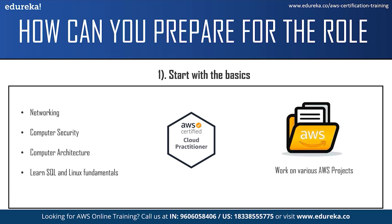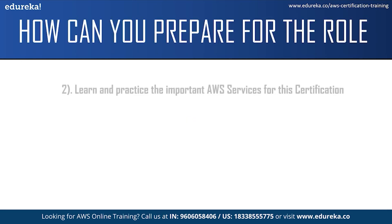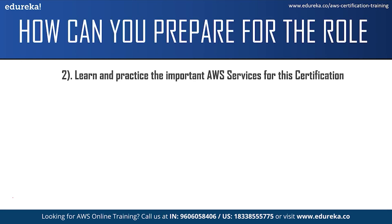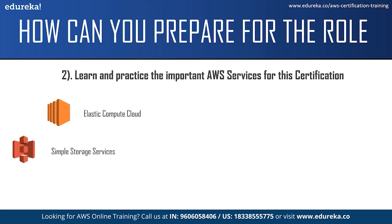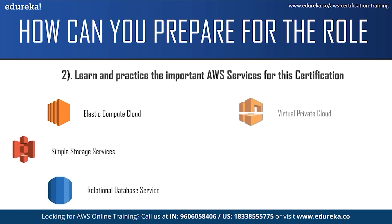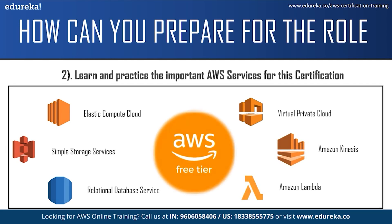The next step is working on AWS projects. You can work on projects across different services — start with easier projects initially and then move to more difficult ones. You can find good projects on the Amazon Web Services official website. After that, learn and practice the important AWS services for the certification: Elastic Compute Cloud, Simple Storage Service, Relational Database Service, Virtual Private Cloud, Amazon Kinesis, and Amazon Lambda. You can practice these services using an AWS Free Tier account.